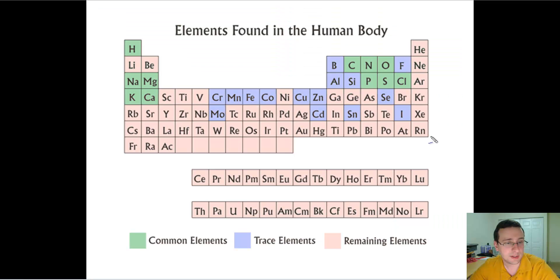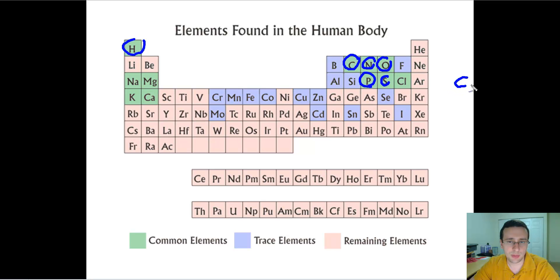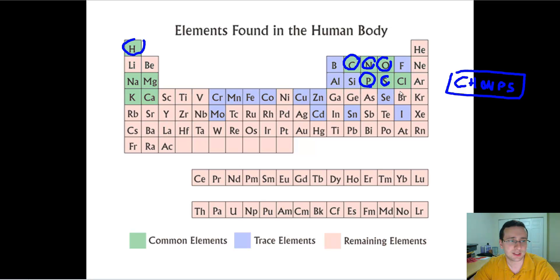Then you also have the abundance of elements in our bodies. The most important ones are going to be carbon, hydrogen, oxygen, nitrogen, phosphorus, and sulfur — and we call that CHUMPS. When you go into biology, you'll learn which macromolecules of life include which of these elements. In addition to CHUMPS, you also have chlorine, sodium, magnesium, potassium, and calcium as the most common elements of life, with trace elements marked in blue, and the remaining ones not very important for life.